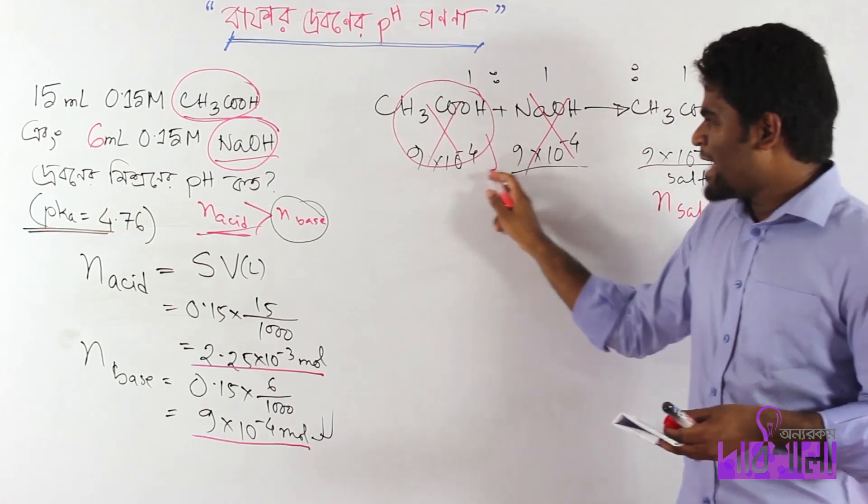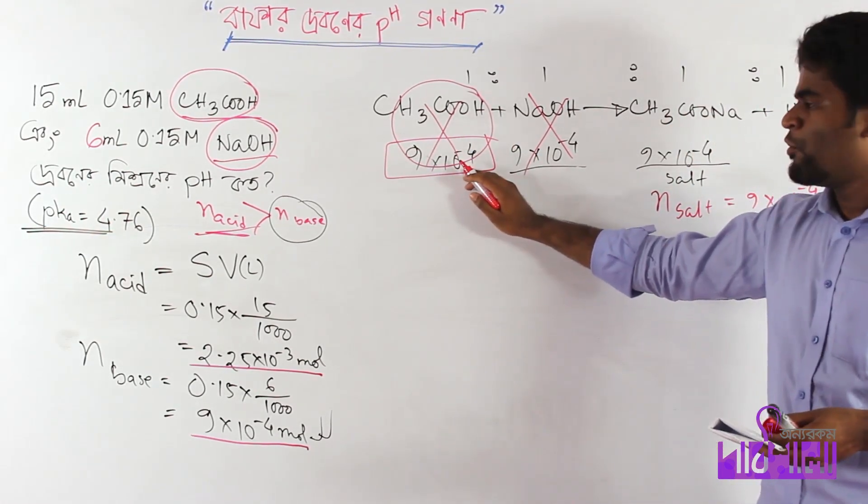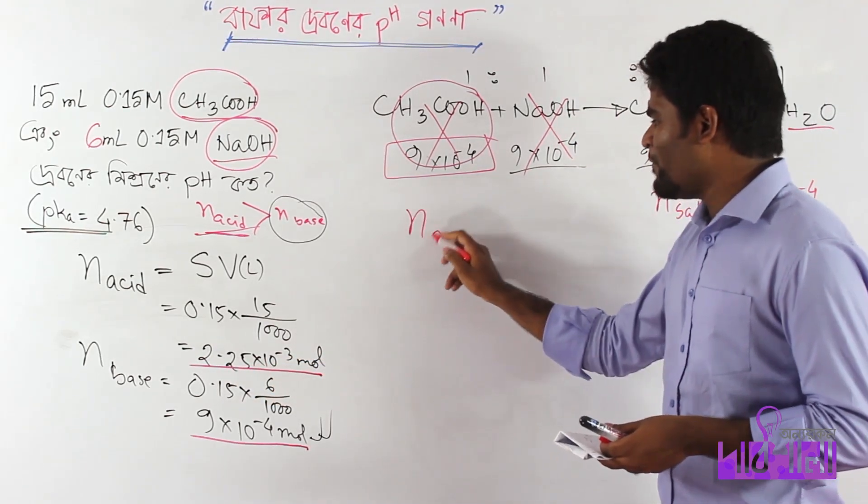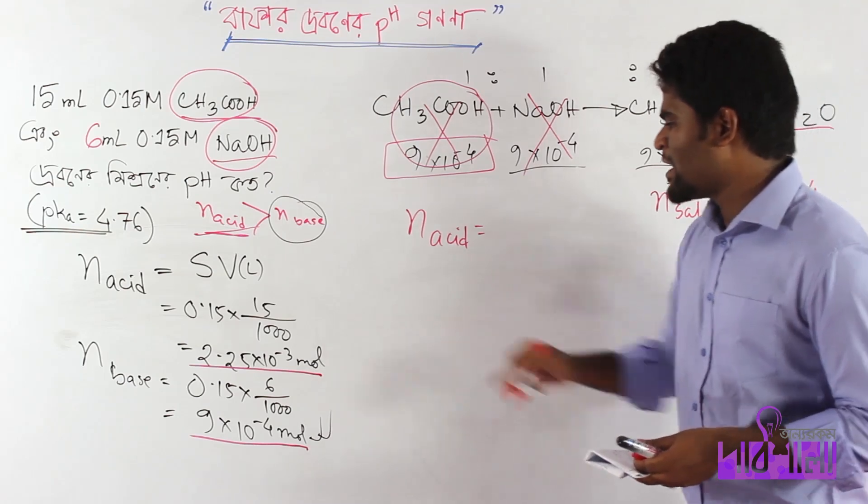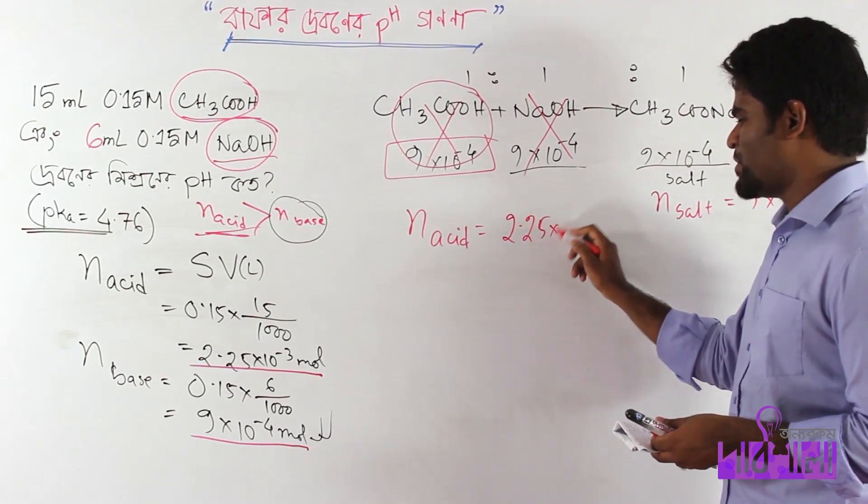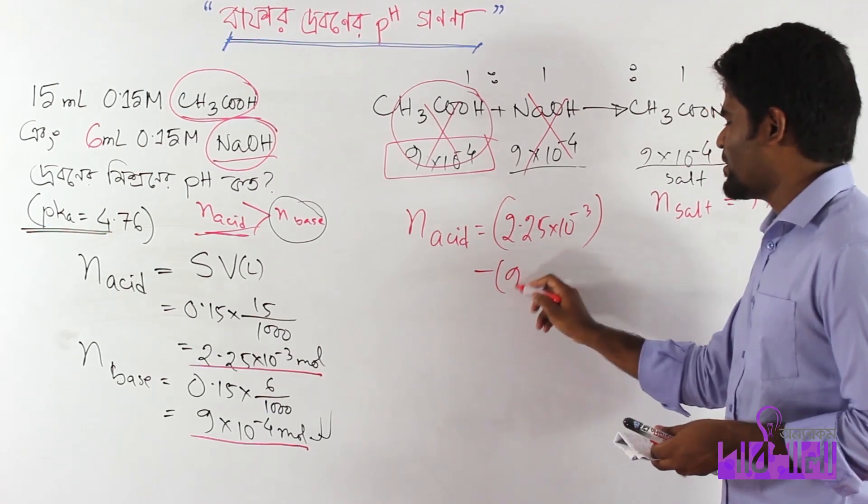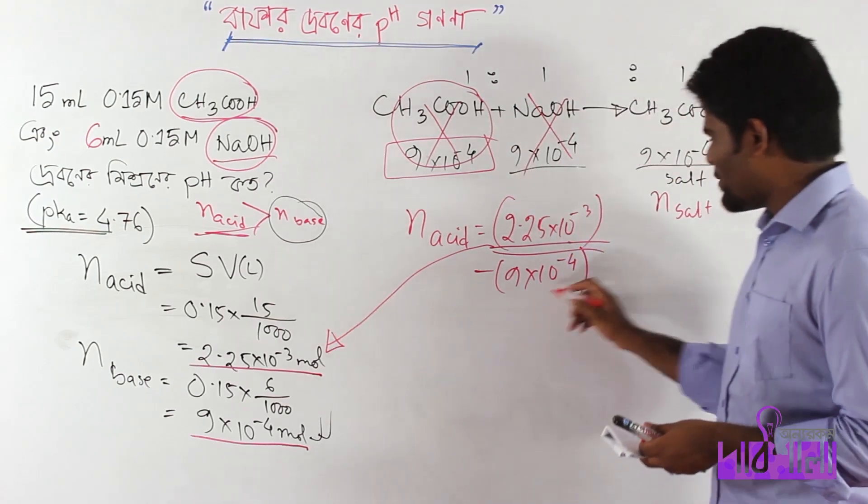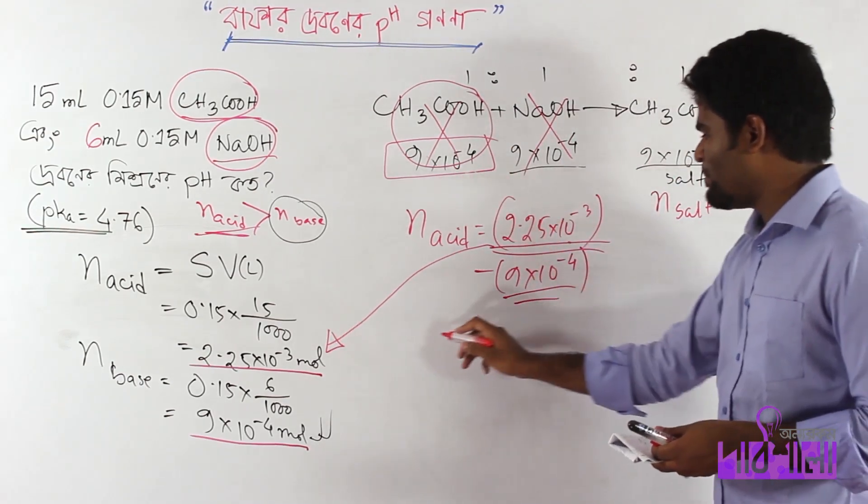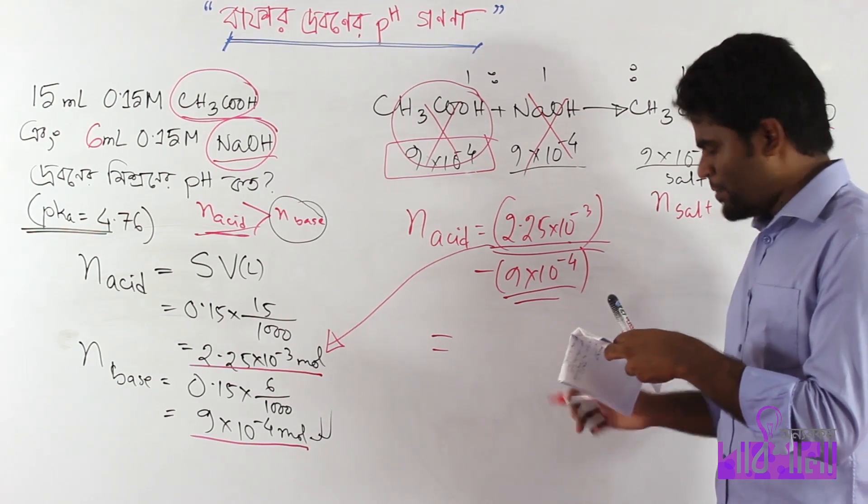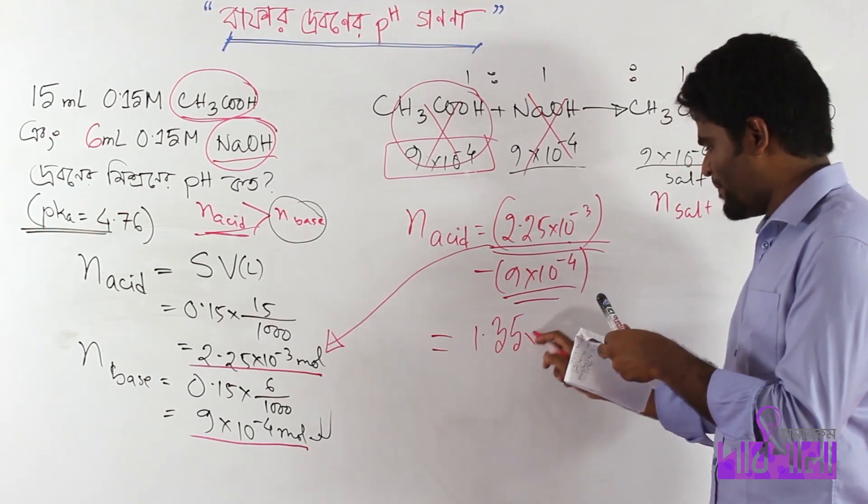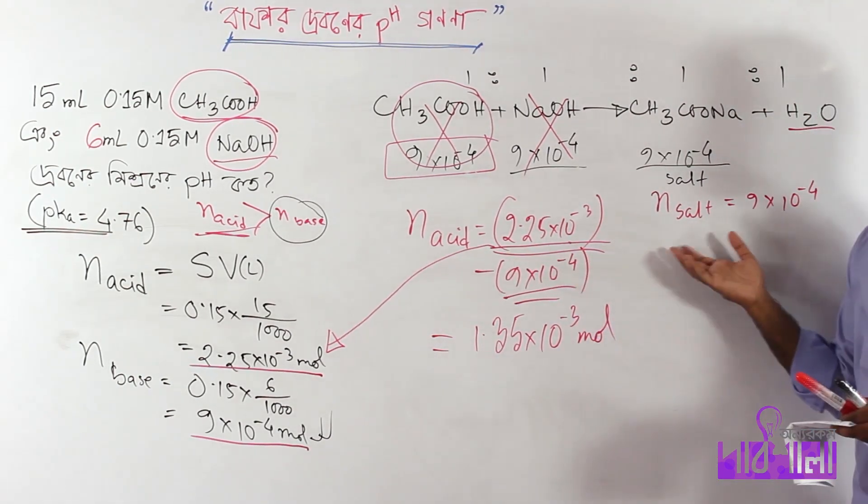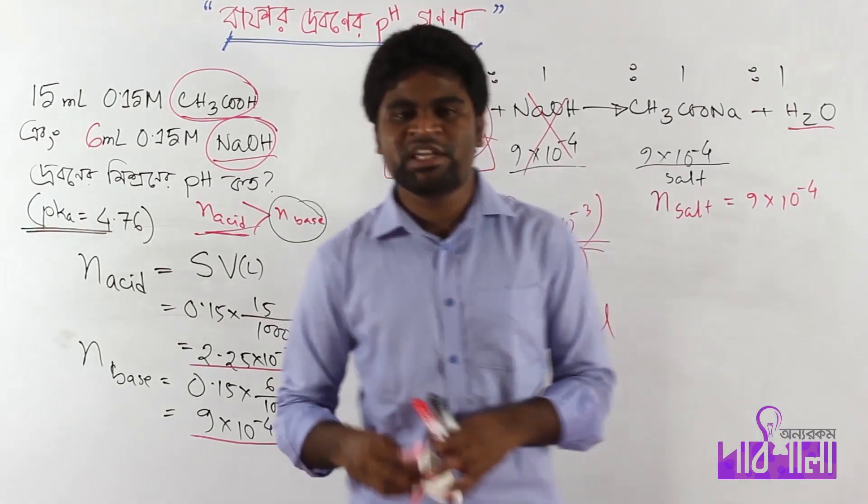The initial acid is 2.25 into 10 to the power minus 3 mol. The remaining acid is 2.25 into 10 to the power minus 3 minus 9 into 10 to the power minus 4. This equals 1.35 into 10 to the power minus 3 mol.